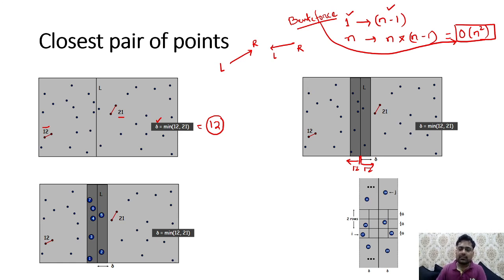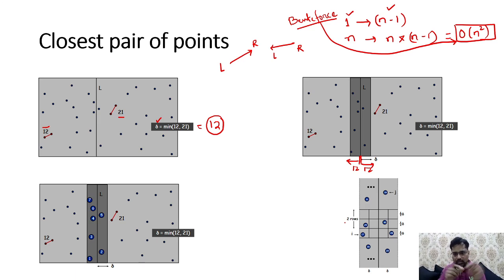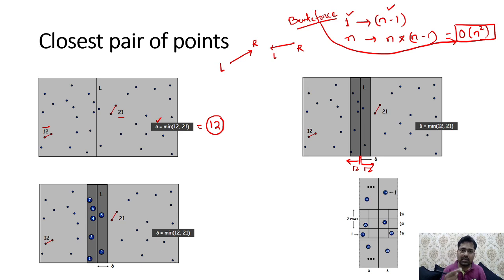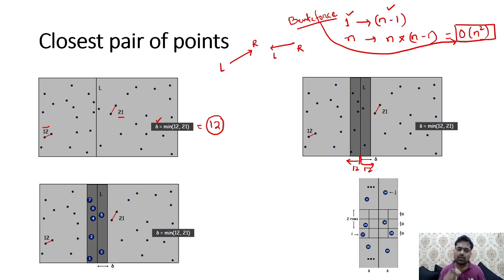Once we found delta as the threshold, we again apply the divide and conquer approach. Here the points are numbered 1, 2, 3, 4, 5, 6, 7. We again try for divide and conquer and may find a pair of points with minimum distance. This is what the closest pair of points we are finding — the minimum distance between two different points on a plane.